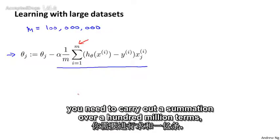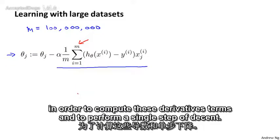you need to carry out a summation over a hundred million terms in order to compute this derivative term and to perform a single step of gradient descent.